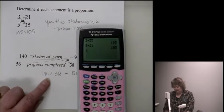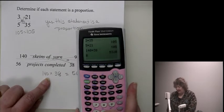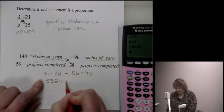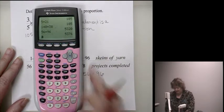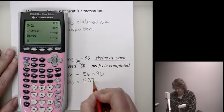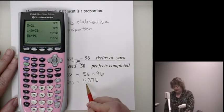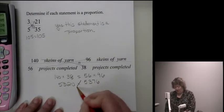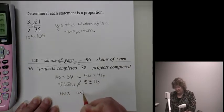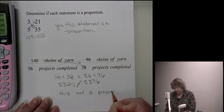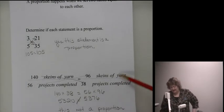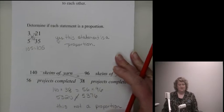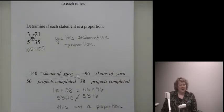These are going to be huge numbers. I'm not expecting you to multiply that out. So I get 5,320 when I multiply 140 times 38, and when I multiply 56 times 96, I get 5,376. So these two are not equivalent. So this is not a proportion. In this case, either they're making different projects or they're not crocheting at the same rate or the same size. So they're not proportional.